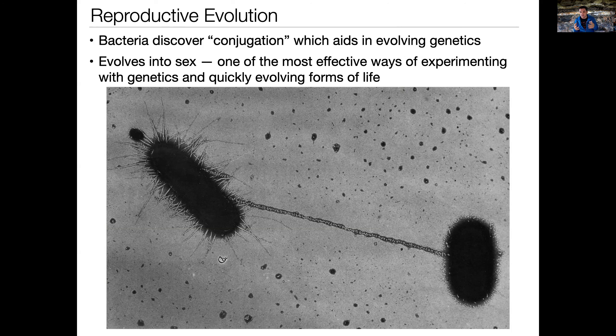The bacteria are the ones who discovered that sex was a good way to produce mutations, and so that allowed for very quick experimentation. We saw a very rapid evolution in the life forms once that appeared in the operational playbook for life forms.